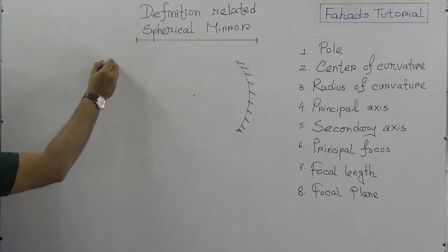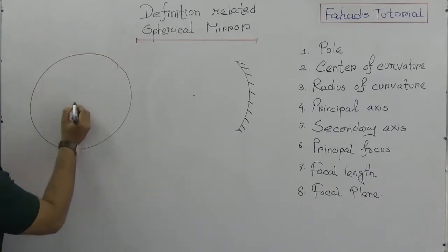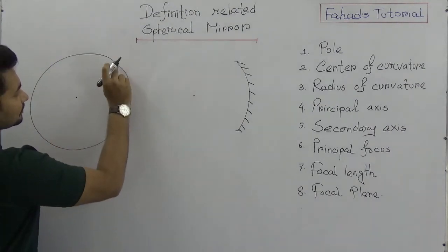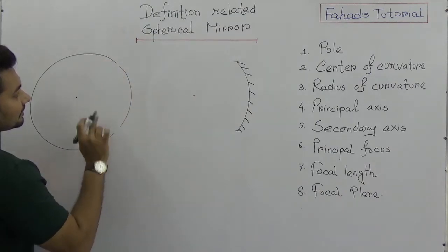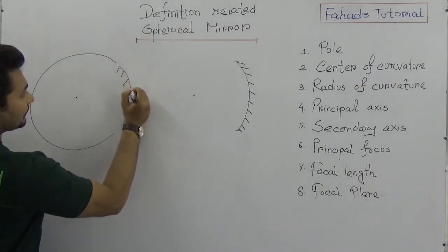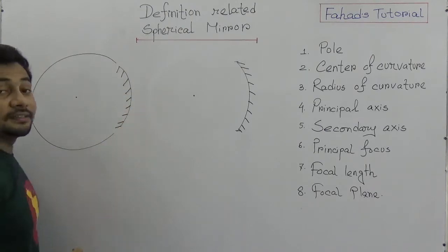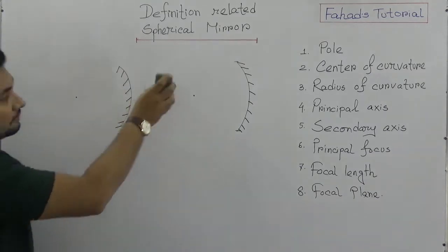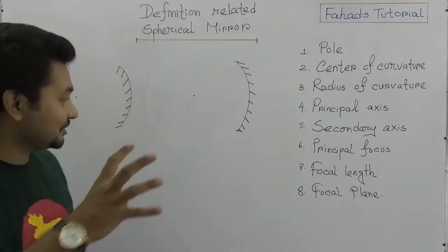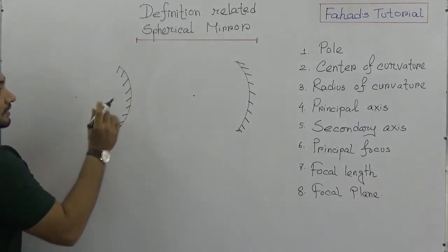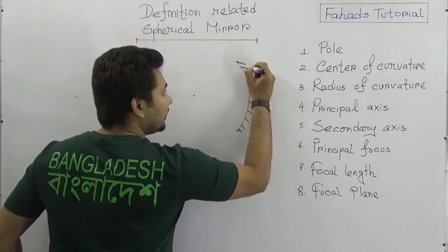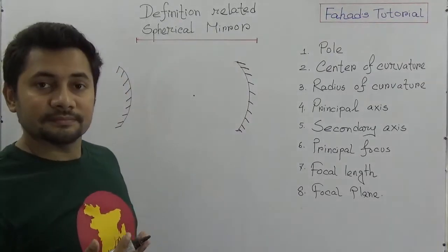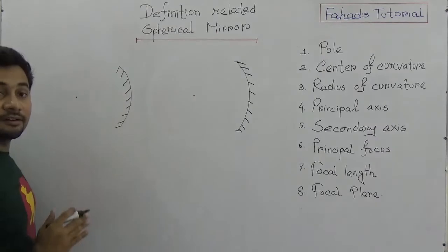Now consider another circle with its center. If I say this part has the key points and I was silvering here, then we will have the convex mirror. As the convex part is being silvered, this is the concave mirror and this is the convex mirror — because this part will be the reflective part.